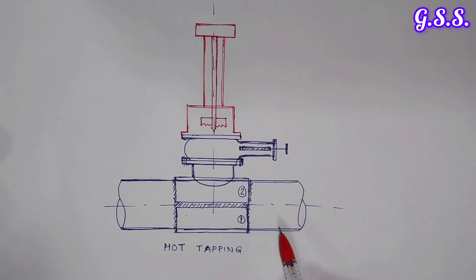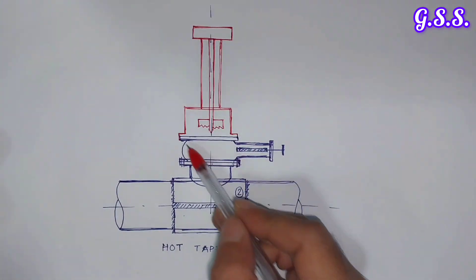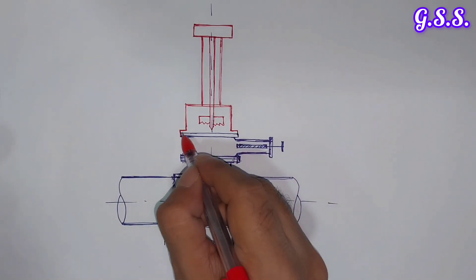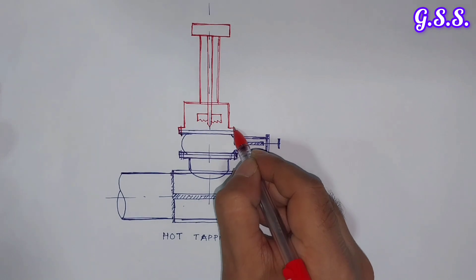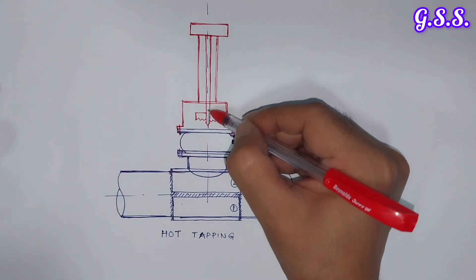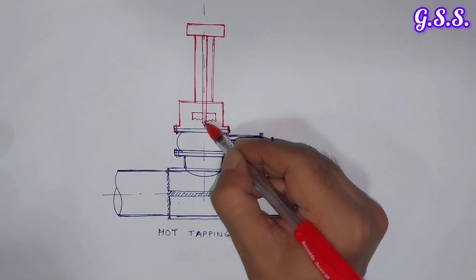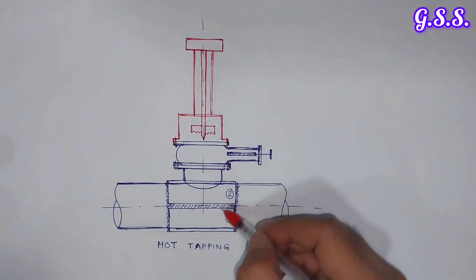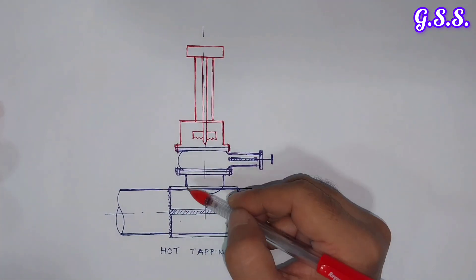Now in the third stage, this is the hot tapping machine. This hot tapping machine is bolted over the flange of the valve. In the hot tapping machine, this is the shaft, this one is the small drill, and this is the main cutter. This hot tapping machine is hydraulically operated by a diesel engine.